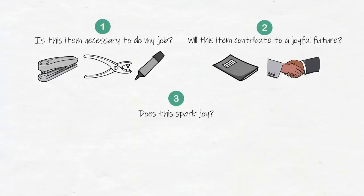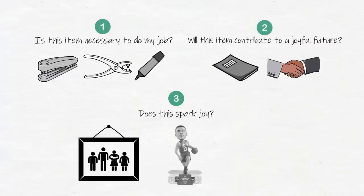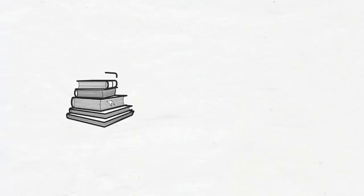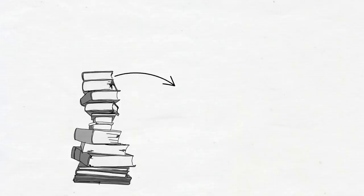Items that spark joy include pictures of your family, a piece of memorabilia on your desk, like a bobblehead of your favorite athlete that you got from a game that you went to with your kid, or a potted plant on your desk. After this video, try using those three questions to organize the books and manuals in your home office. Start by gathering all of your books and manuals in a single pile in the middle of your office. Then pick up one item at a time and ask the three questions.